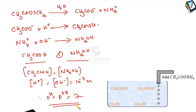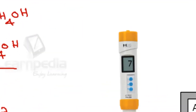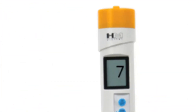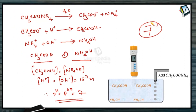Let us now see by using the pH meter what is the pH of this solution. The pH meter shows a value of 7. Therefore this aqueous solution of the salt ammonium acetate has pH 7. But for other salts of weak acid and weak base, the pH need not be 7 — it depends upon the KA and KB values of the weak acid and weak base from which the salt is formed.